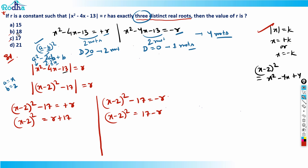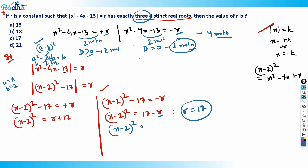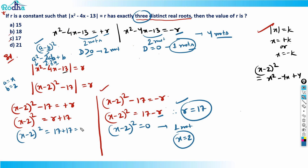Looking at the options and applying our condition: for r = 17, the equation (x-2)² = 17 - 17 = 0 gives only one root, x = 2. The other equation becomes (x-2)² = 17 + 17 = 34, which gives two distinct roots. So one root plus two roots gives three distinct real roots total.